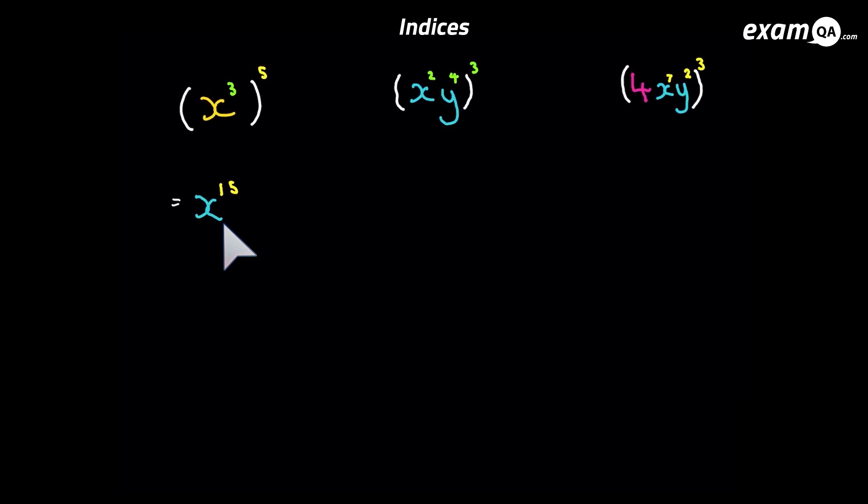So let's try the next one. Again we have that same situation. We've got the brackets and a power outside the brackets. So again we times the powers. So if you want to pause the video and have a go yourself, go for it. Okay so the two times the three gives us six. So the x's power is now going to be six. And the four times three gives us twelve. So y's power is going to be twelve.